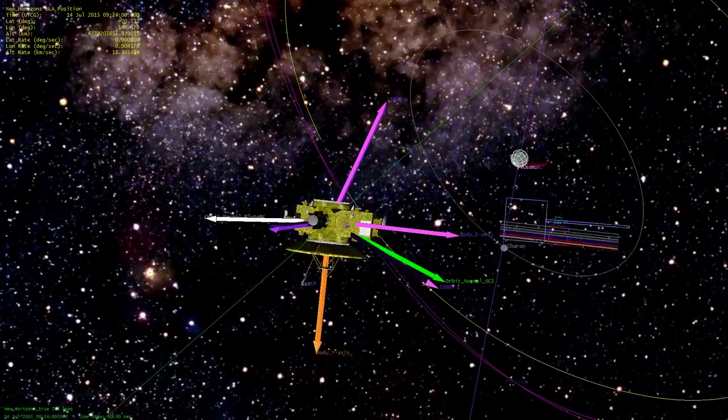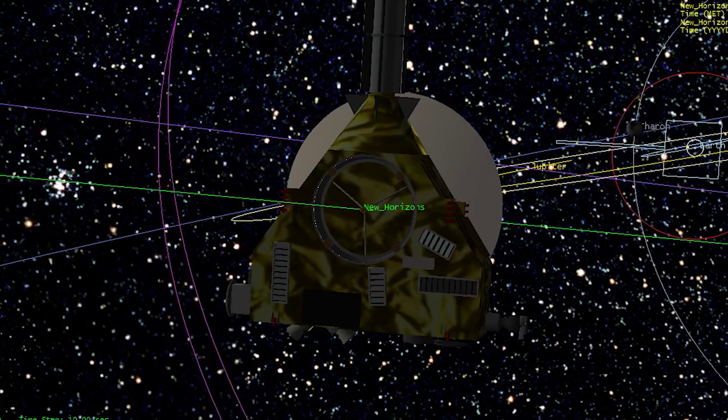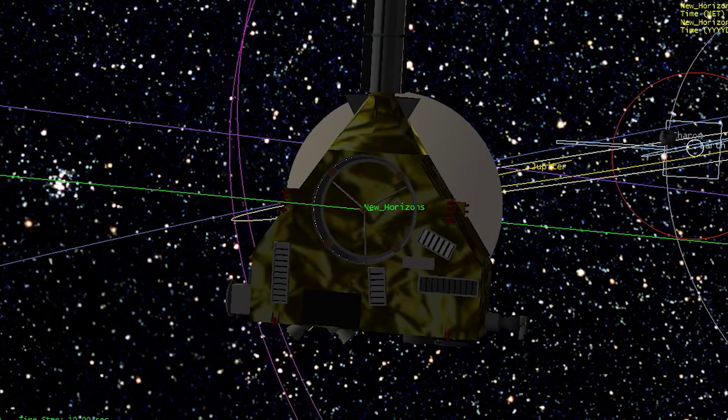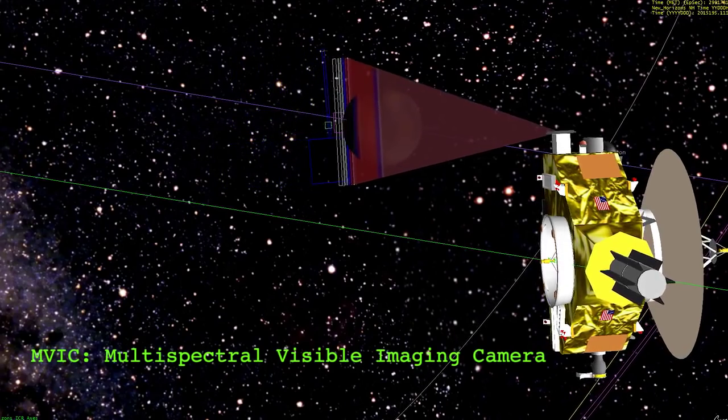Then as we get around toward Pluto's Terminator, we take our very long high-resolution scans in black and white, which means that we can use the very wide field MVIC and at the same time use the narrow field LORRI.